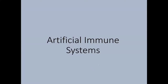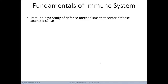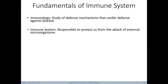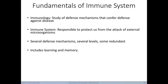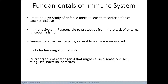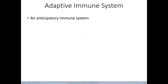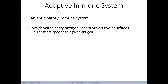Now we're going to move on and talk about artificial immune systems. Immunology is the study of defense mechanisms that confer defense against disease. The immune system protects us from attack by external microorganisms. There are several defense mechanisms at several levels, and the immune system includes aspects of learning and memory. Pathogens can include viruses, fungi, bacteria, and parasites. An antigen is any molecule that can stimulate the immune system. The adaptive immune system — the inspiration for artificial immune systems — includes lymphocytes that carry antigen receptors on their surfaces, which are specific to a given antigen.